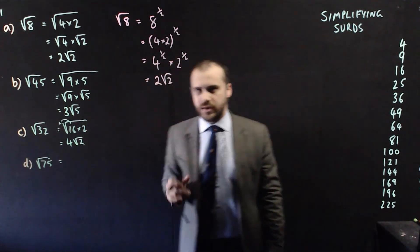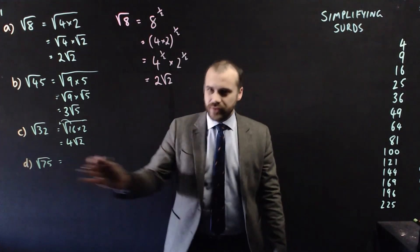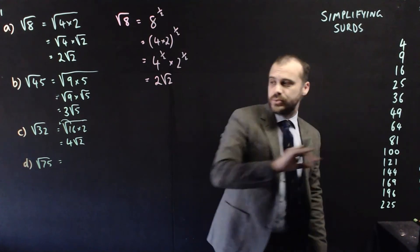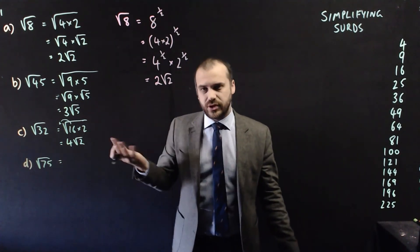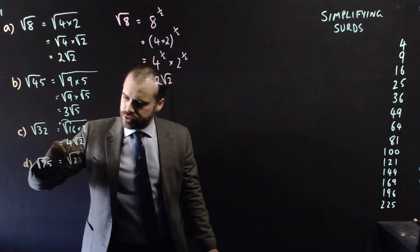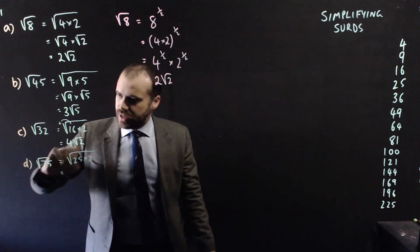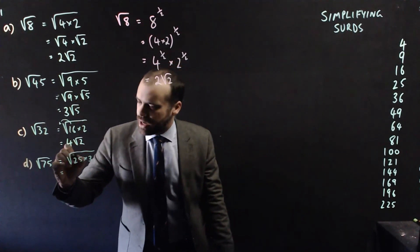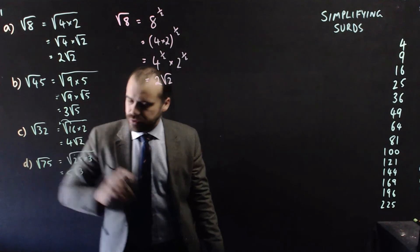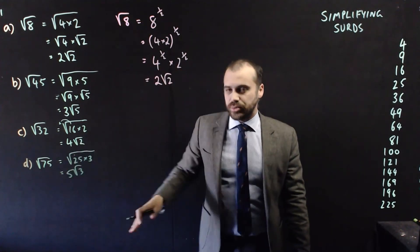One more example here: root 75. I see 75, I see the 5 on the end, I get suspicious. I think maybe 25 might be a good one, and yes, 25 times 3 is the same as 75. So root 25 times 3. And again I can skip this intermediary step. This root 25 can come out, I get 5 root 3. So that's simplifying surds.